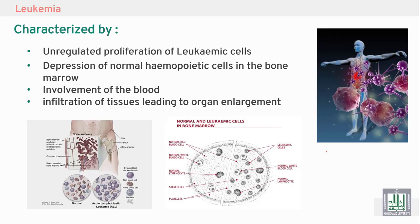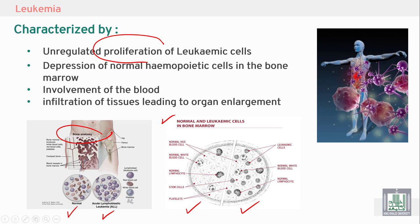Leukemia is characterized by uncontrolled, unregulated proliferation of leukemic cells. You can see here: in normal cells, the count is controlled, while in abnormal cases it is uncontrolled, with depression of normal hematopoietic cells. The tumor produces malignant cells at the expense of normal hematopoietic cells.